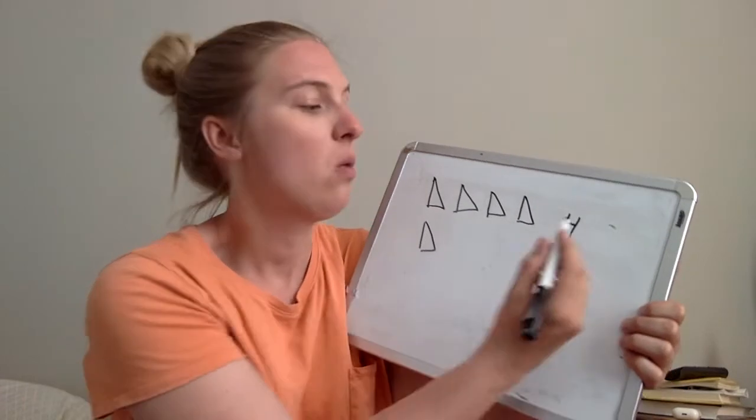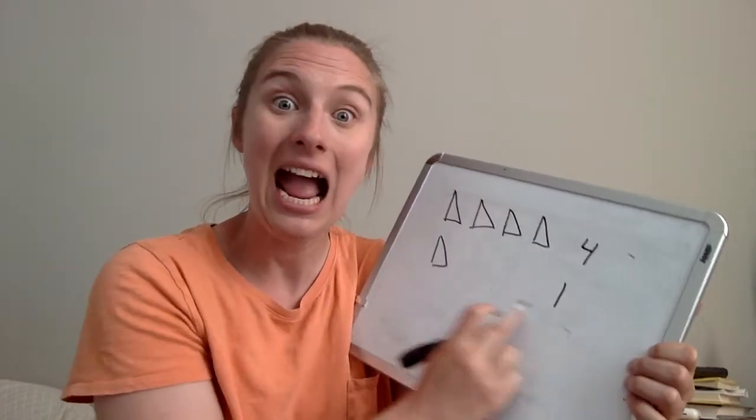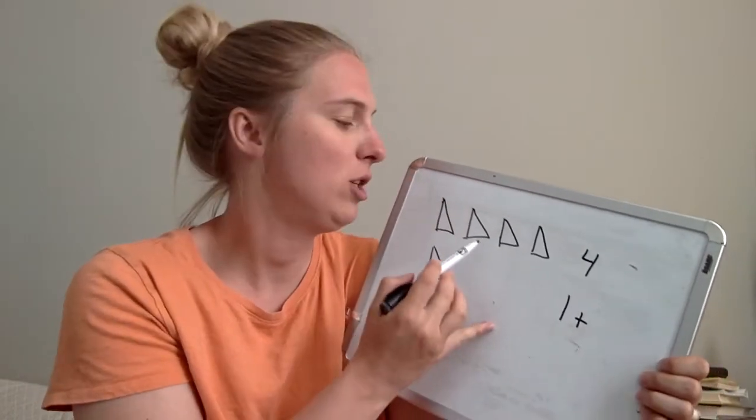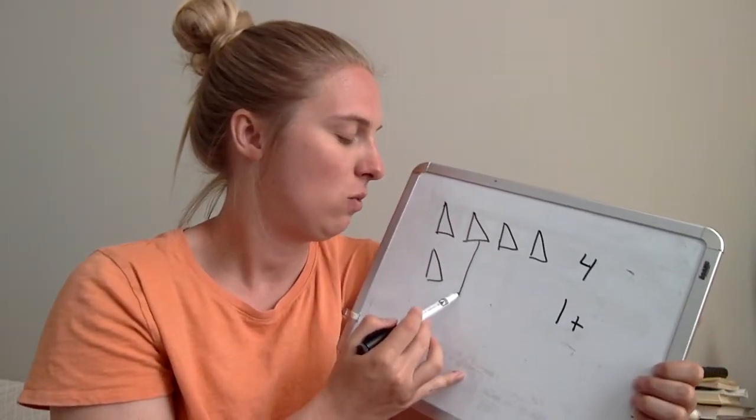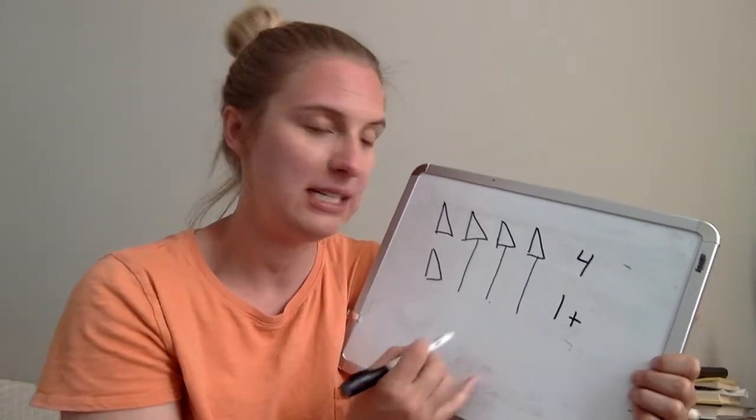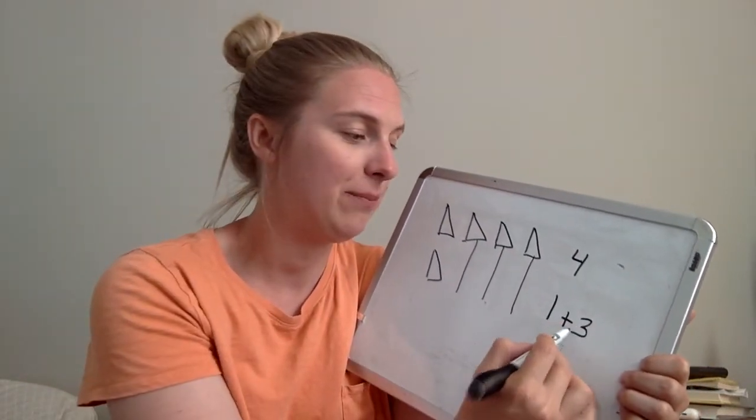Down here, how many do we have? One. I need to add more to get to four, right? So I'm going to put the plus sign. How many more do I need to add? Count with me. One, two, three. To make it equal, how many did I add? Three. One plus three equals four.